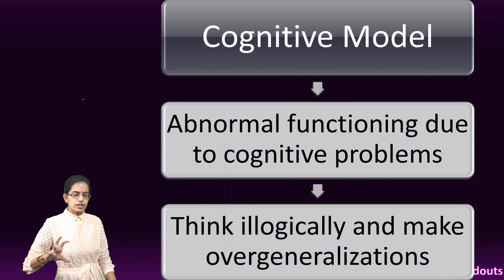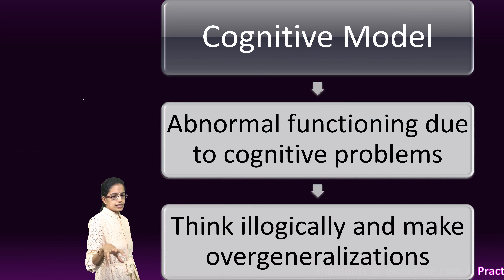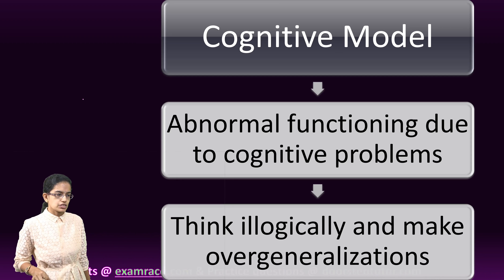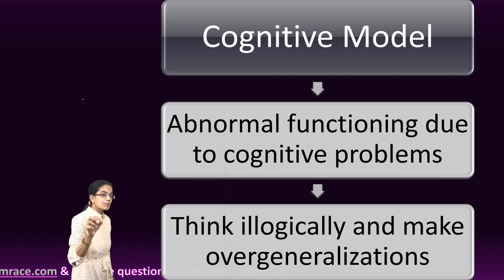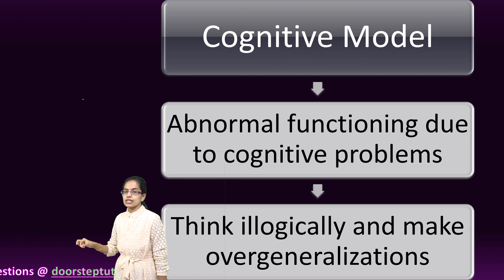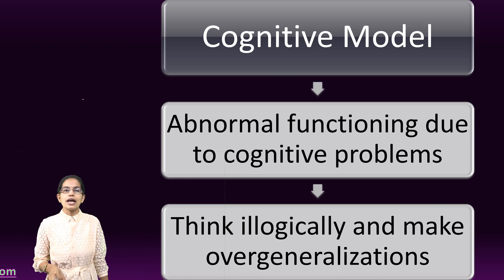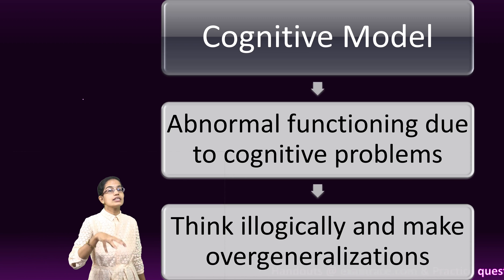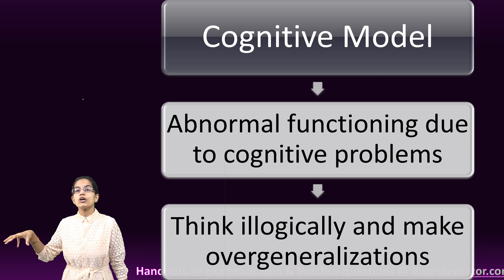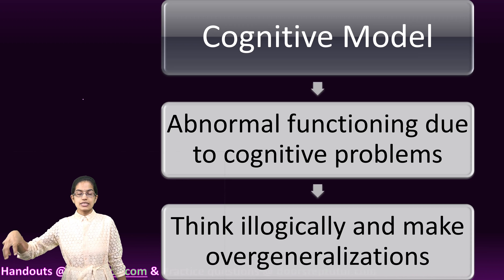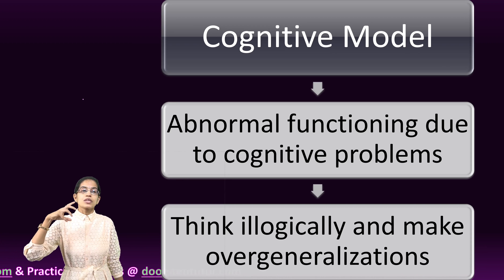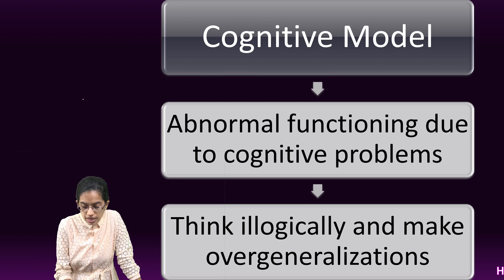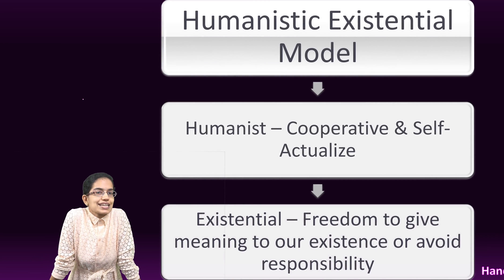The cognitive model addresses cognitive problems — why a person thinks illogically or makes overgeneralizations. A person might repeatedly think illogically, and the cognitive model helps understand and address the reasons behind such irrational beliefs. For example, a person saying 'I am not wanted, I am ugly' reflects an irrational belief that exists in the mind.